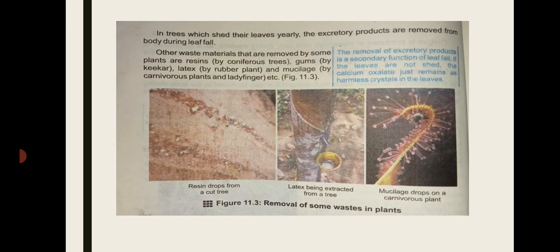Other waste materials that are removed by some plants are resins, gums, latex, and mucilage. If you look at Figure 11.3, there are various wastes removed from plants: resin drops visible on trees, latex extracted from trees, and mucilage drops found on carnivorous plants. When we break leaves or stems, we can observe these in the form of latex or mucilage drops.